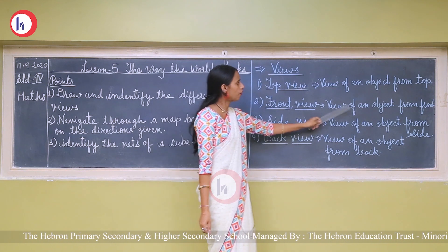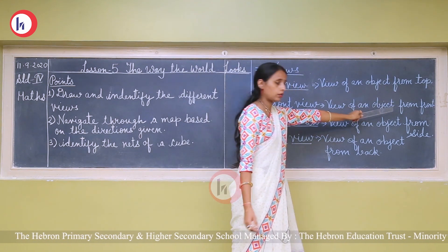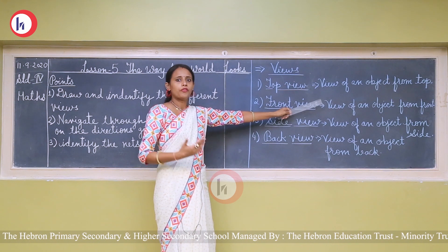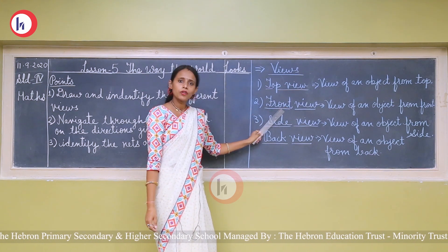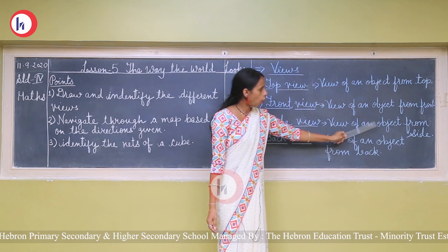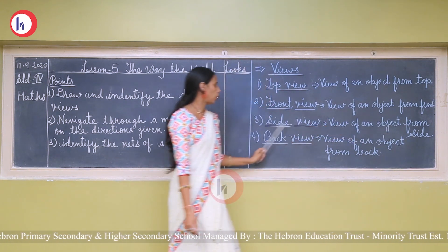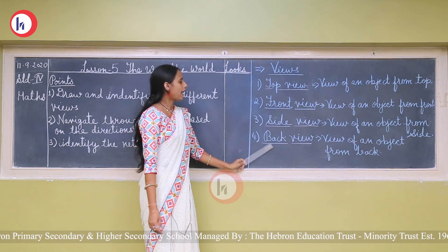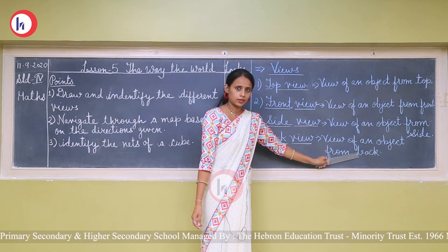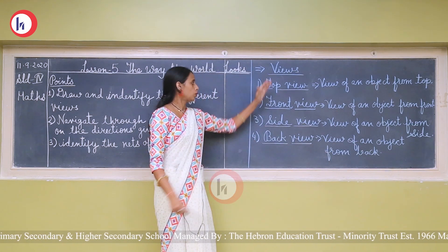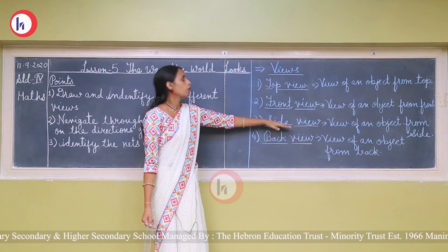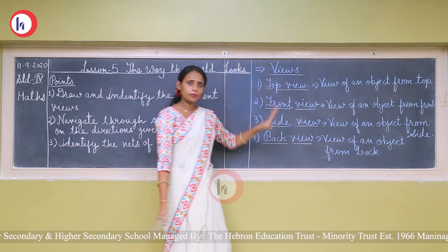Next is the front view — the view of an object from the front, which we are seeing from the front side, is called the front view. Side view is the view of an object from the side. Back view is the view of an object from the back. So there are four possible views of an object.